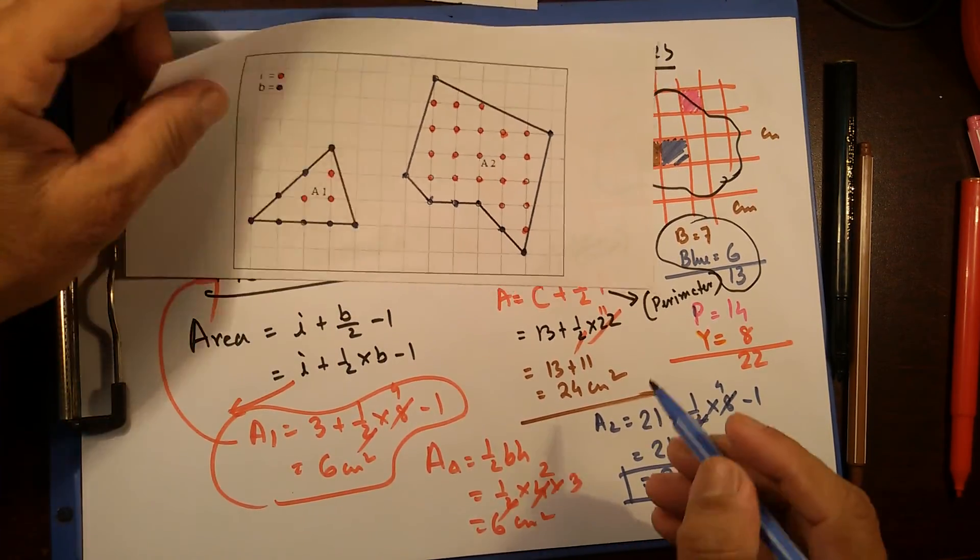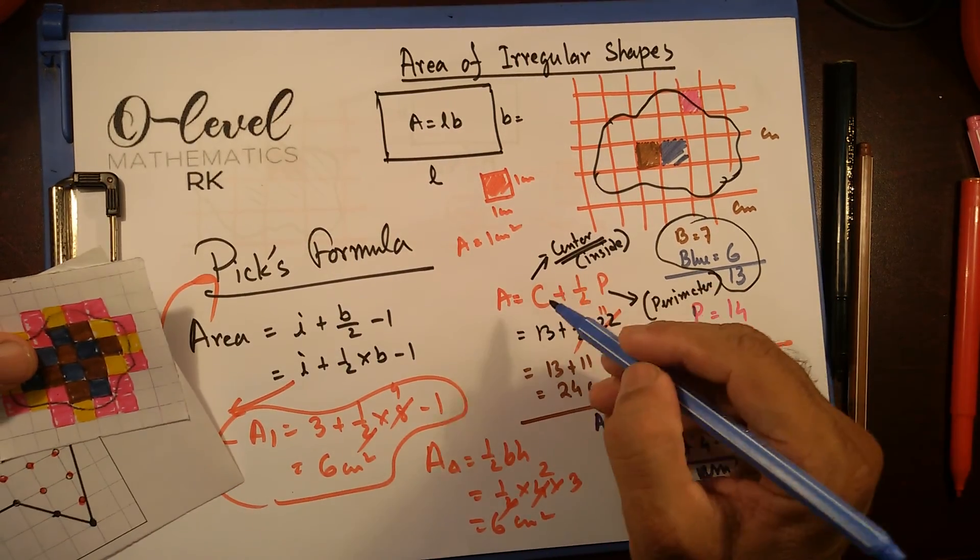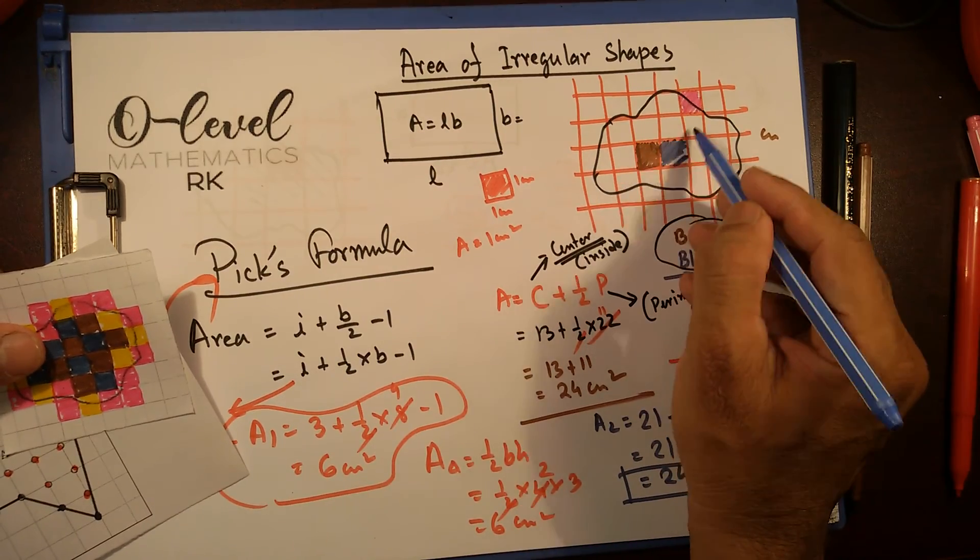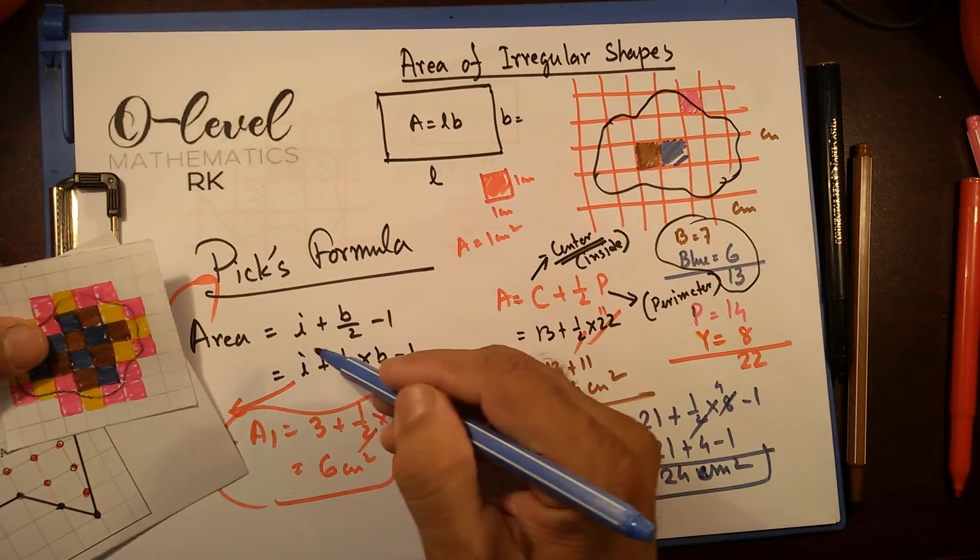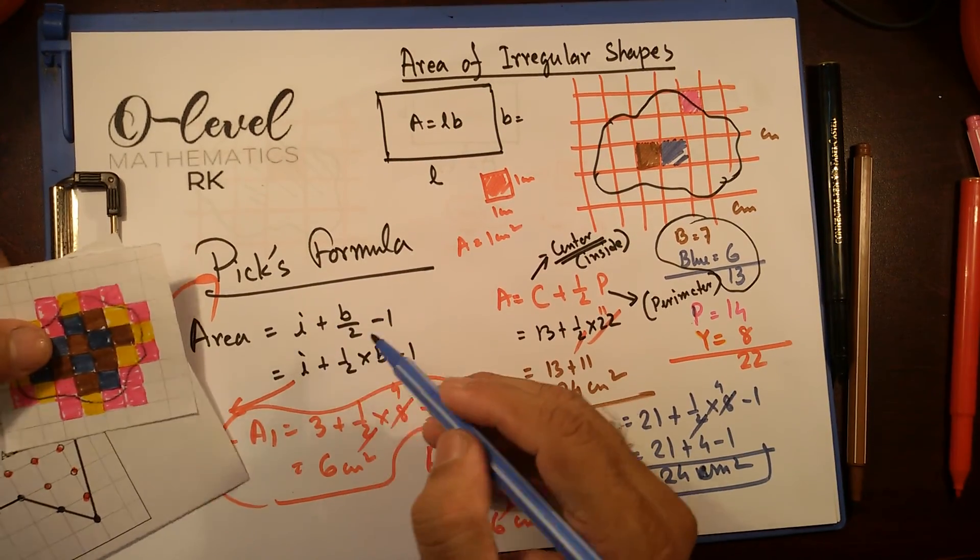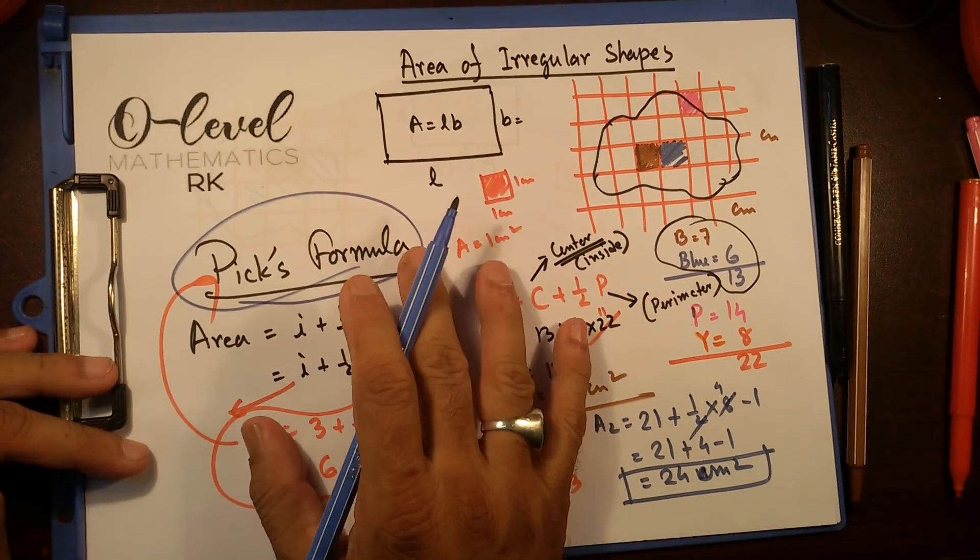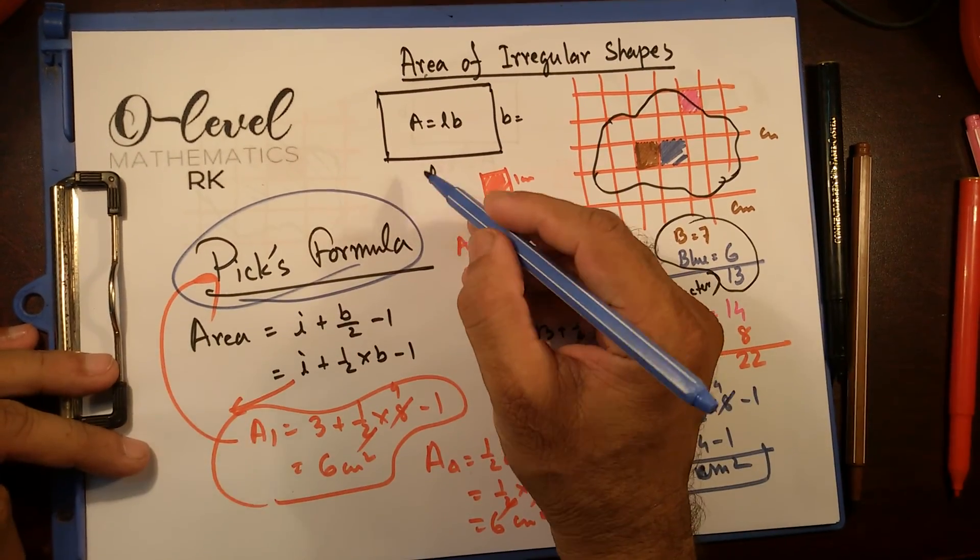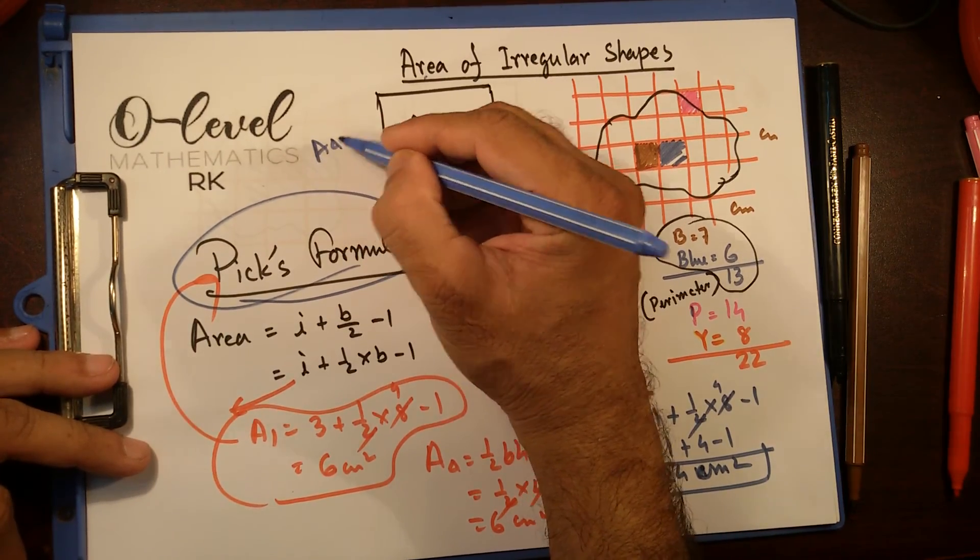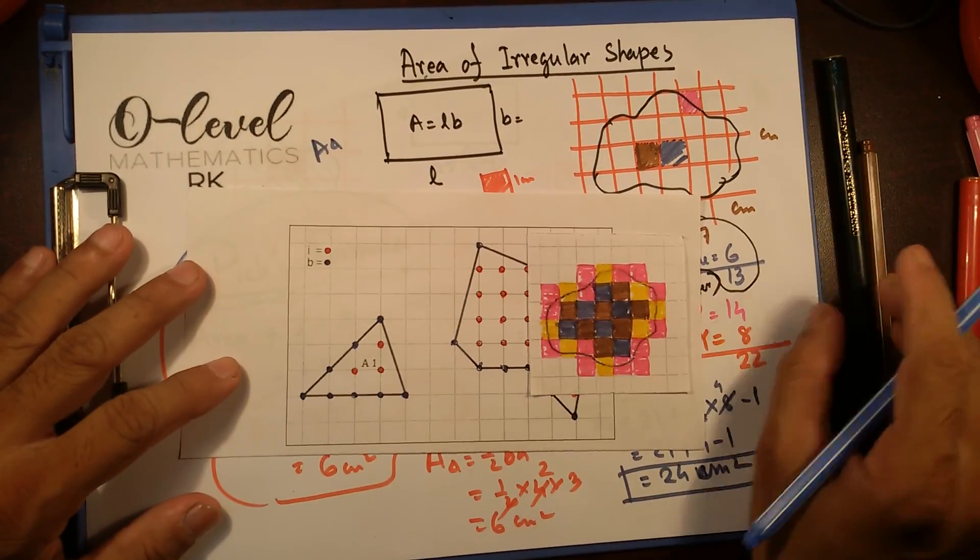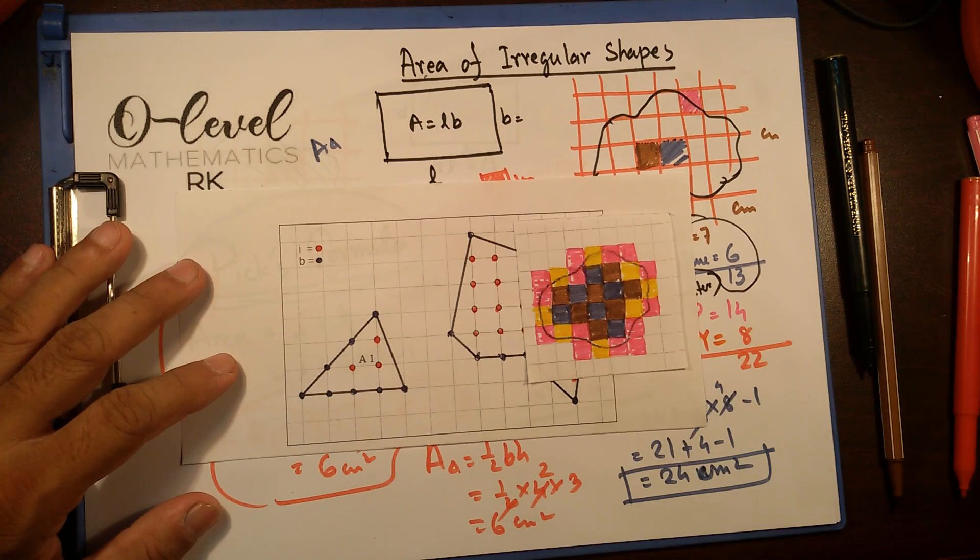This is how we calculate irregular shapes. One is with this formula: central complete box plus half of the boxes that are on the perimeter. And this one: inner point plus half of the boundary point minus 1, that's Pick's formula. This is how we calculate the irregular shapes. On next video, I'll show you how do we get area of triangle and other areas. Hopefully you like it. If you do, please leave your comment in the comment box. Thank you, have a good day.